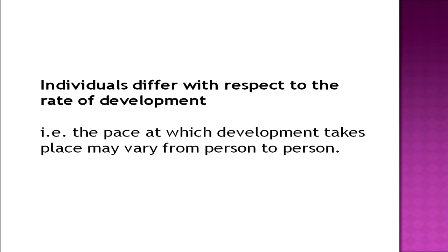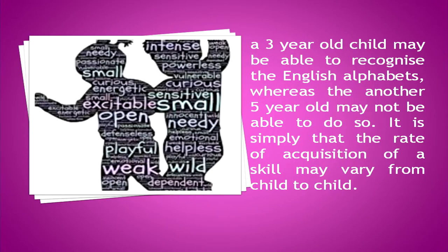Another principle is that individuals differ with respect to the rate of development — there are individual differences in development stages. The pace at which development takes place may vary from person to person. For example, a three-year-old child may be able to recognize the English alphabets, whereas another five-year-old may not. It simply means the rate of acquisition of a skill may vary from child to child, and that does not mean the five-year-old is not capable enough.